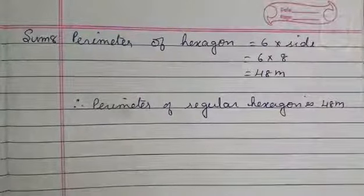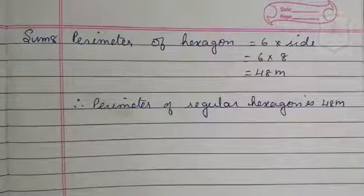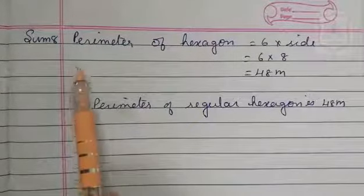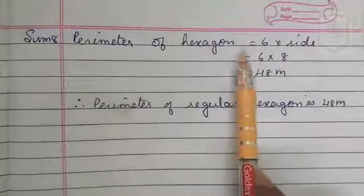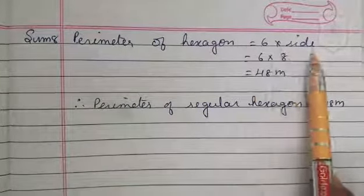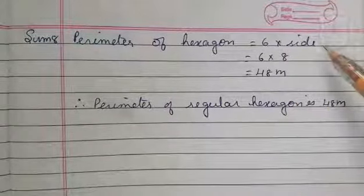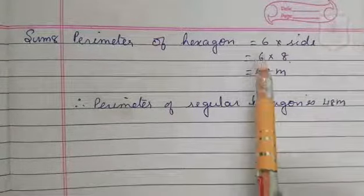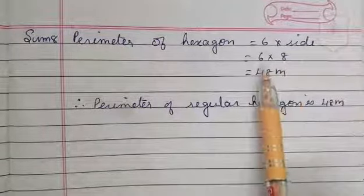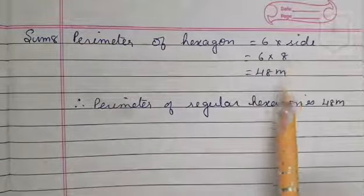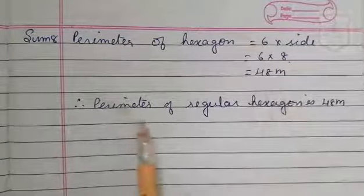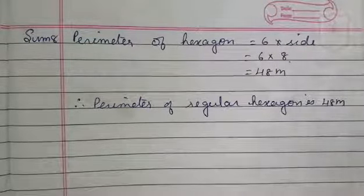Solution for question number 8. We have to find the perimeter of a regular hexagon. The formula is: Perimeter of a hexagon = 6 × side. Side is given as 8 meters, so we write 6 × 8. By multiplying 6 and 8, we get 48 meters. Therefore, the perimeter of a regular hexagon is 48 meters.